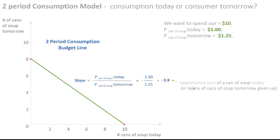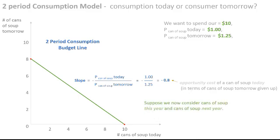Next, let's consider that instead of today and tomorrow, it's this year and next year. If that's the case, how would we have to change our model? Any money we save this year will earn interest as we put it into a savings account, giving us more money in the future. However, as we just saw, prices go up in the future so we'll buy fewer cans. So we need to combine the change in prices as well as the interest earned on savings.